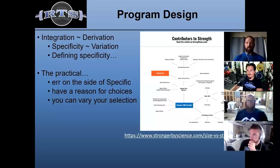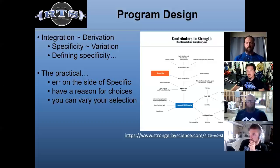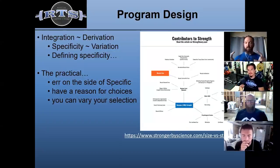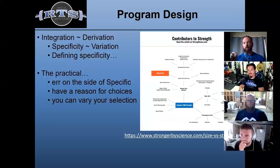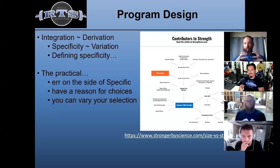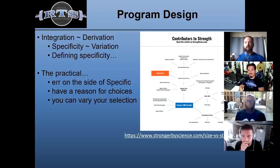Defining specificity can also be difficult. There's a chart from strongerbyscience.com — Greg Knuckles' website — that breaks down the factors affecting strength contributions. Some of those are trainable, some are not. If you train a 1RM squat, that's the integrated skill and you're bringing all those things in at once. There may be utility in breaking it up and training specific parts at different times, so the question is: what's the right combination?